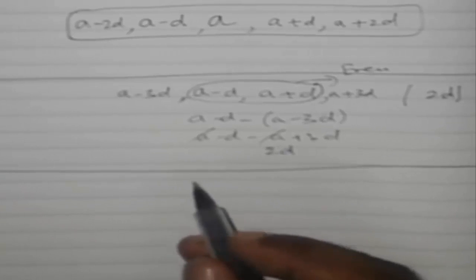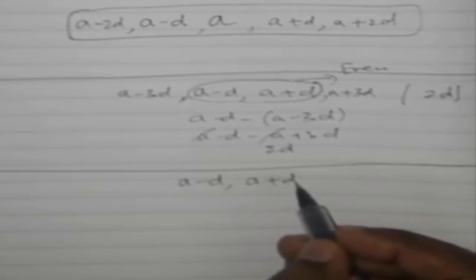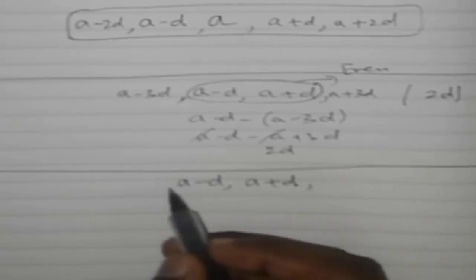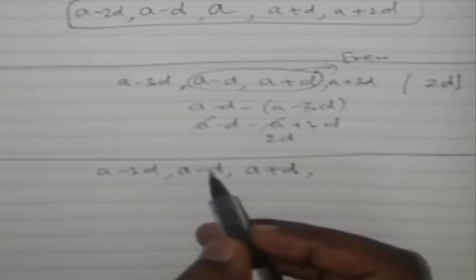Then followed by a minus 3d. Since our difference is 2d, then again it would be a minus 5d here. Same, you have to repeat a plus 3d.